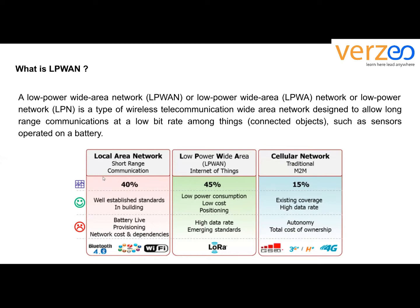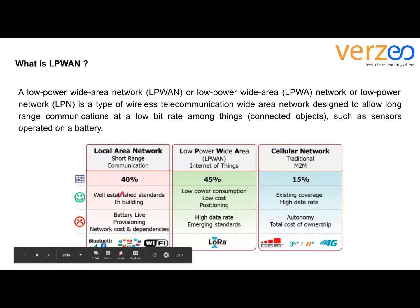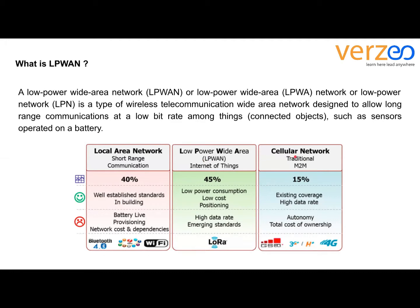We can compare the difference between local area network (LAN), low power wide area (LP-WAN), and cellular networks. Looking at efficiency: LAN is 40% efficient, LP-WAN is 45% efficient, and cellular networks are 15% efficient.